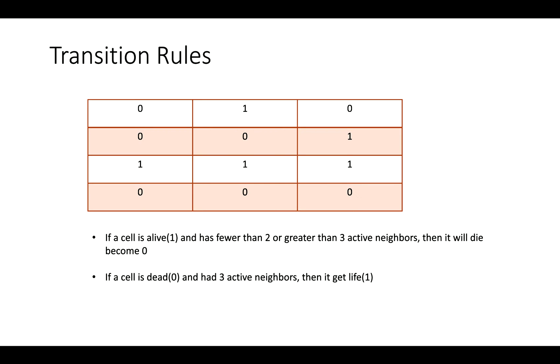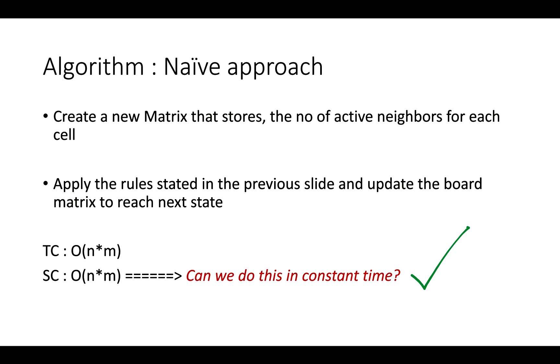Let's understand the transition rules. Out of those four rules that were specified, I have reduced them to just two rules. If a cell is alive and has fewer than two or greater than three active neighbors, then it will die and become zero. If there's a dead cell with exactly three active neighbors, then it will come back to life and its value will become one.